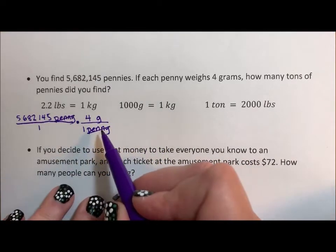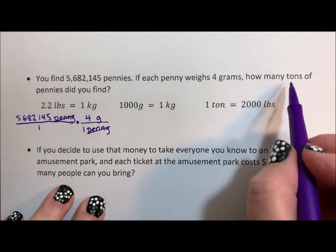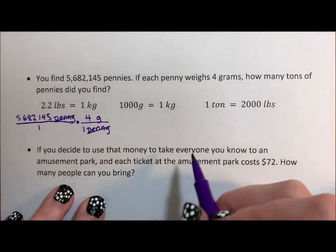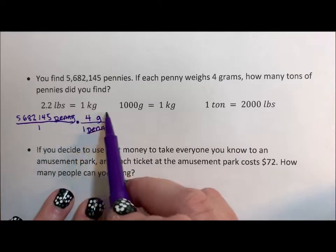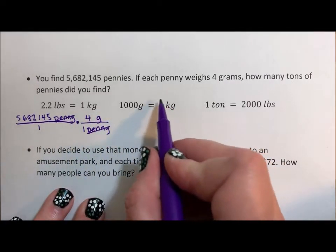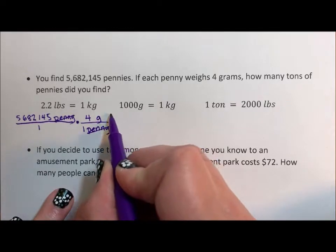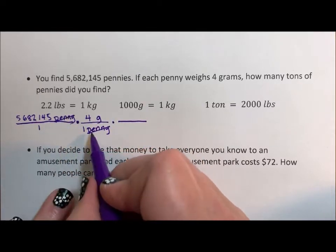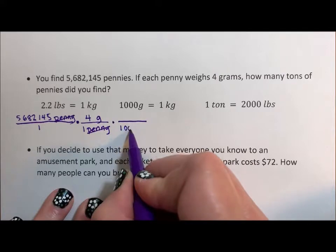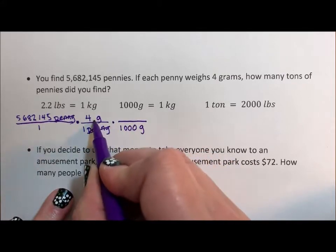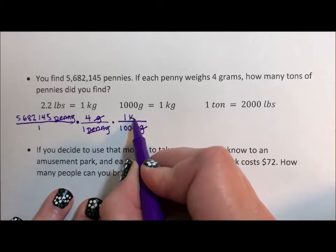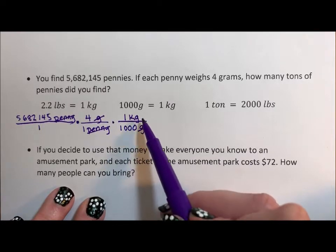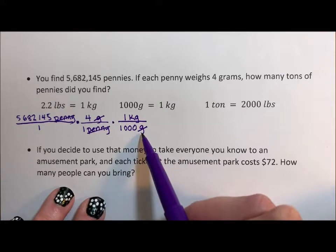Now I know how many grams I have of pennies, but I want to know how many tons of pennies I found — could I throw them in my back pocket and go home? All I have in my conversions is grams to kilograms, and again this is equivalent to 1. I want to get rid of grams and go to kilograms, so I put 1,000 grams in the denominator so the labels cancel, and 1 kilogram goes in the numerator. What I want goes in the numerator, what I have goes in the denominator.